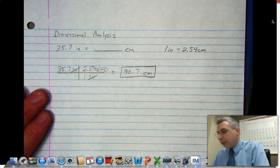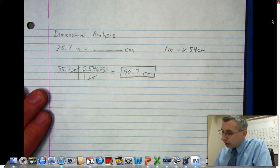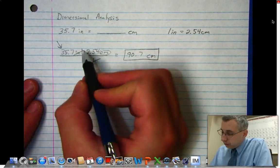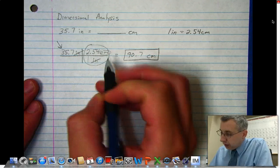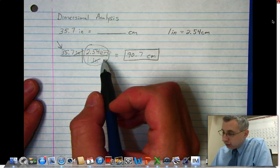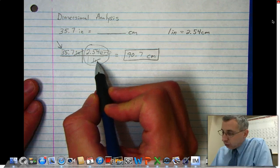That's called a one-step dimensional analysis problem. It starts with what you know, and then here you have the equivalent statement, otherwise known as the conversion factor. Something on top equals what's on the bottom: 2.54 centimeters was one inch.